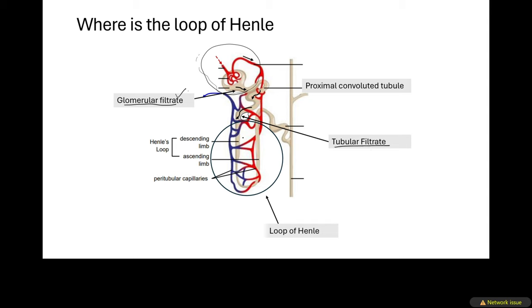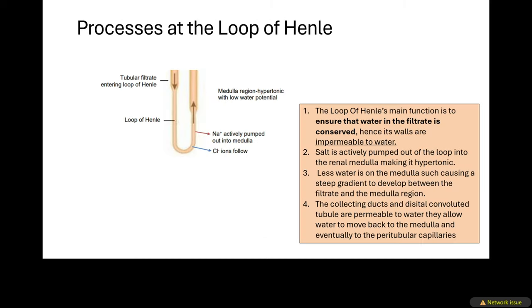This tubular filtrate enters the loop of Henle, also known as Henle's loop. The loop consists of a descending limb and an ascending limb. The loop of Henle is circled here — that is your loop of Henle. These are the peritubular capillaries, the blood capillaries surrounding it. Remember that the loop of Henle is also part of the renal tubule.